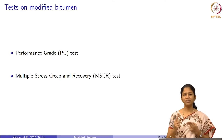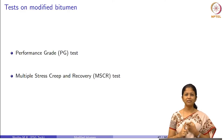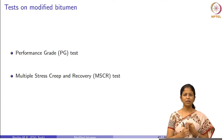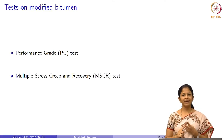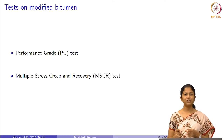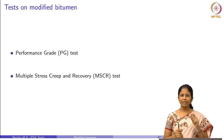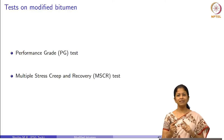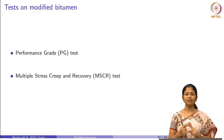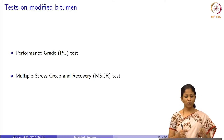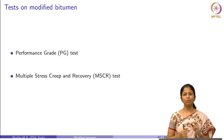Universally, there are two tests which are used for this. One is a performance graded test — we know what a PG test is. It is used for unmodified bitumen but it is used for modified bitumen as well. The second is an MSCR test, which is a multiple stress creep and recovery test. I will explain why an MSCR test is needed in addition for modified bitumen, whereas only a PG test is sufficient for unmodified bitumen.